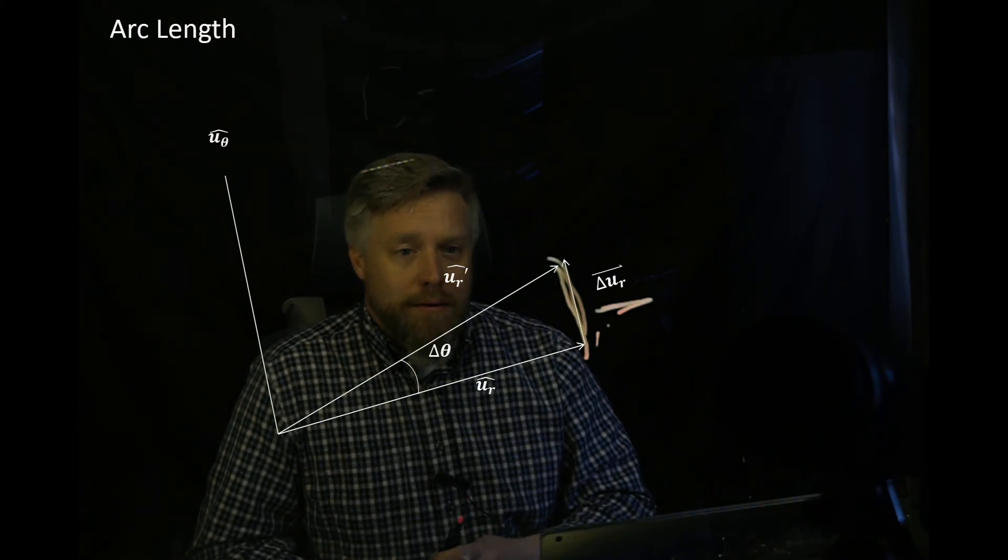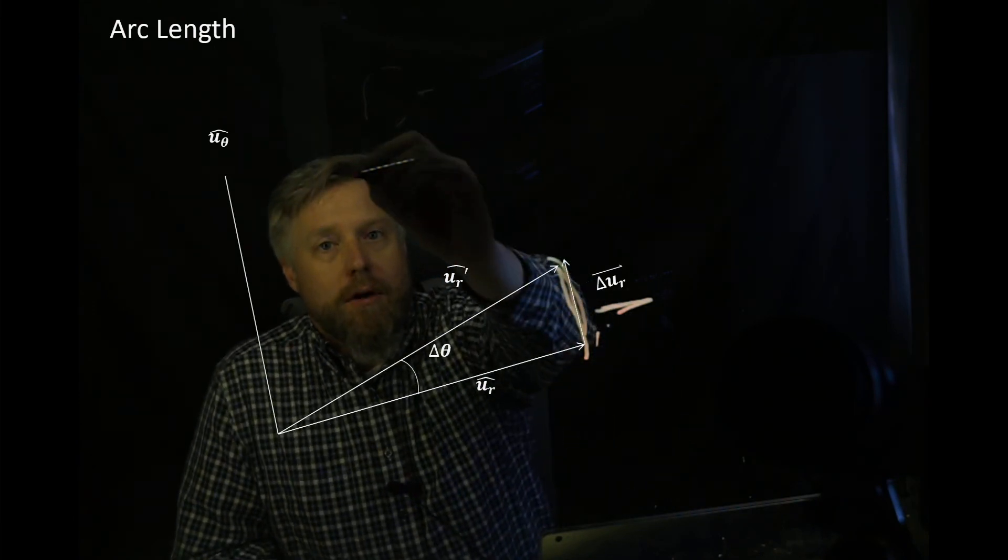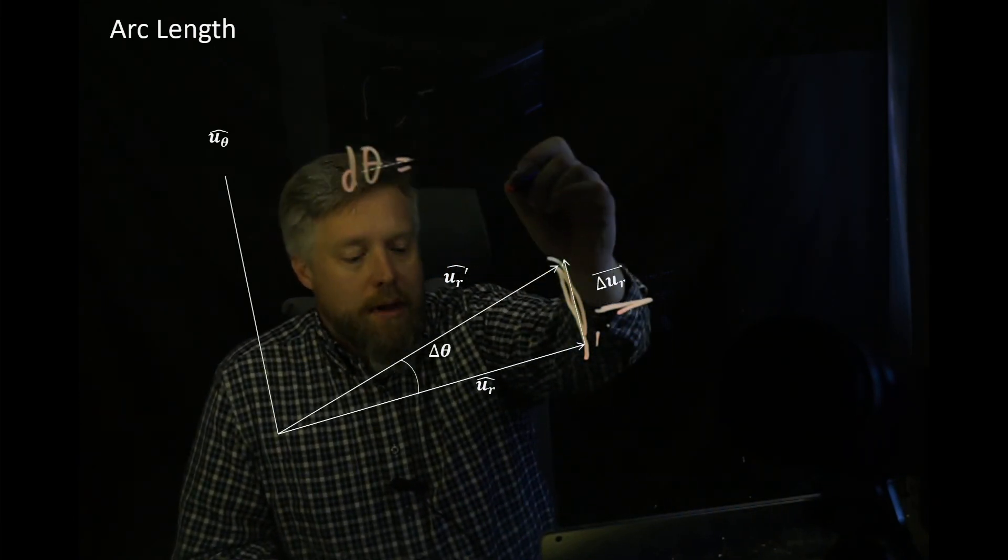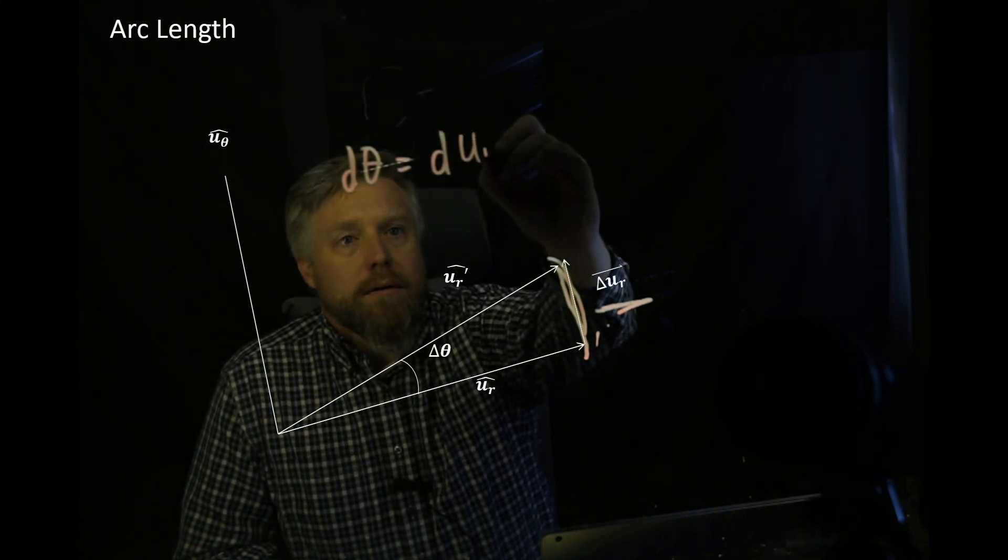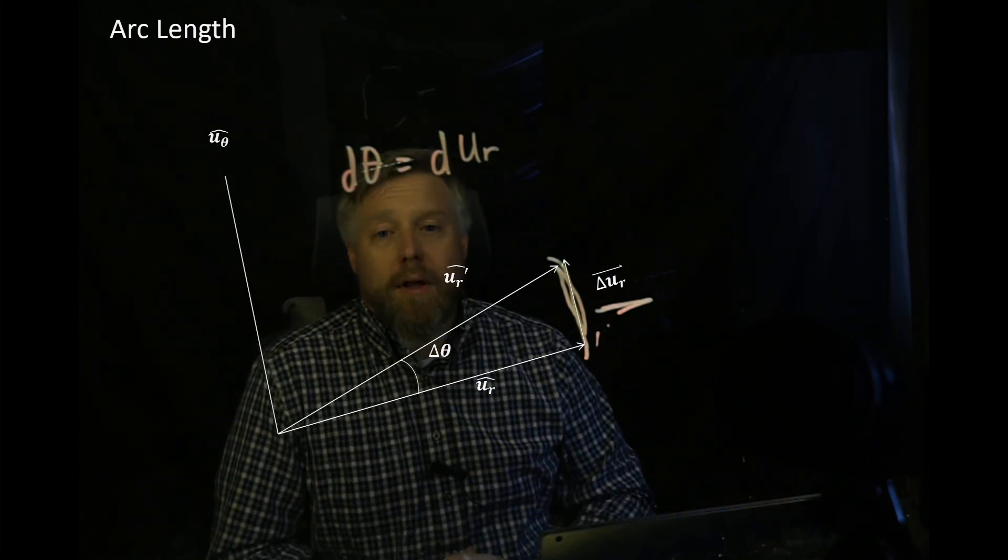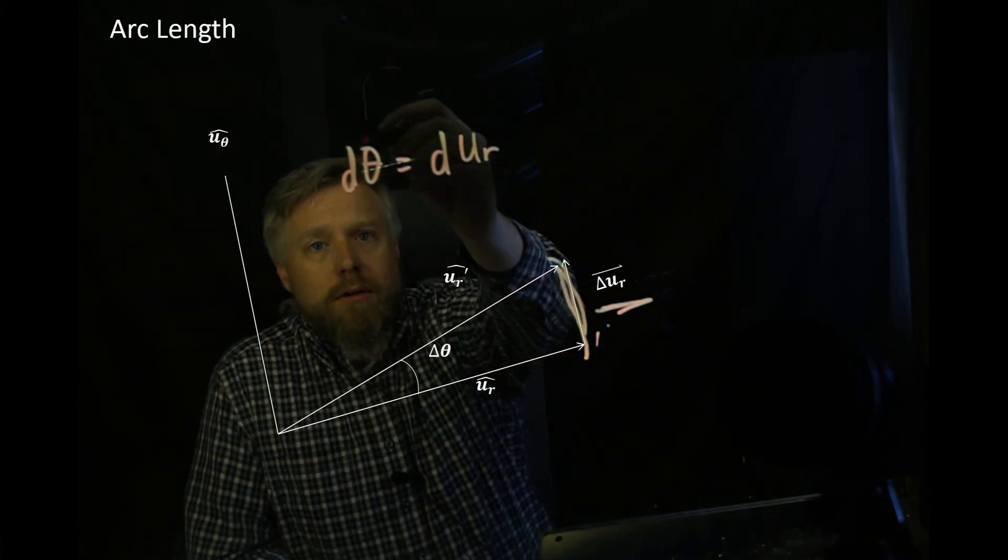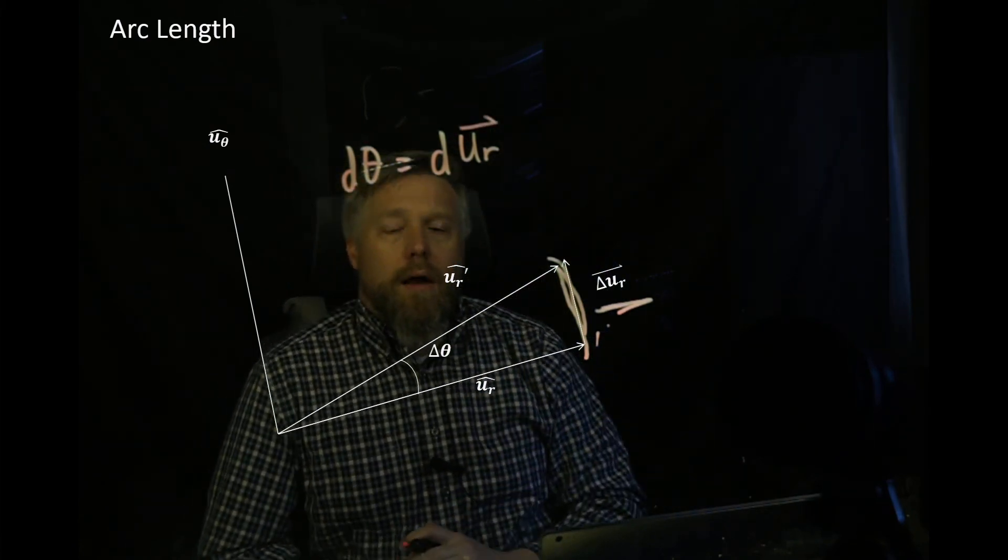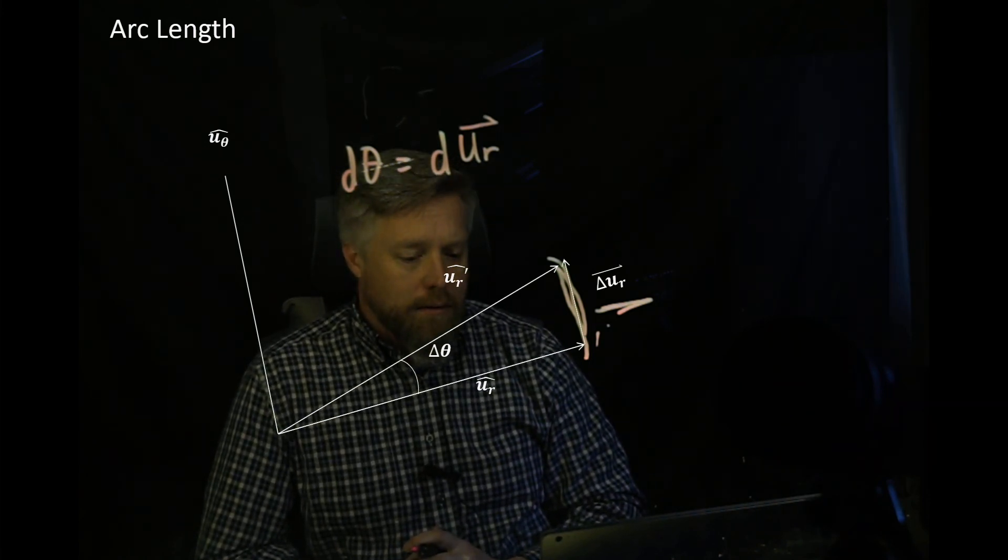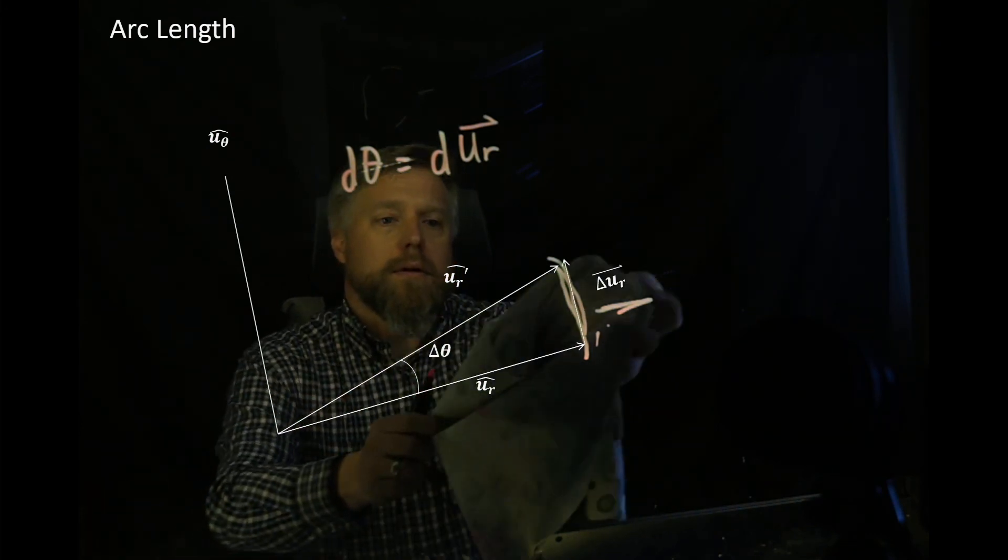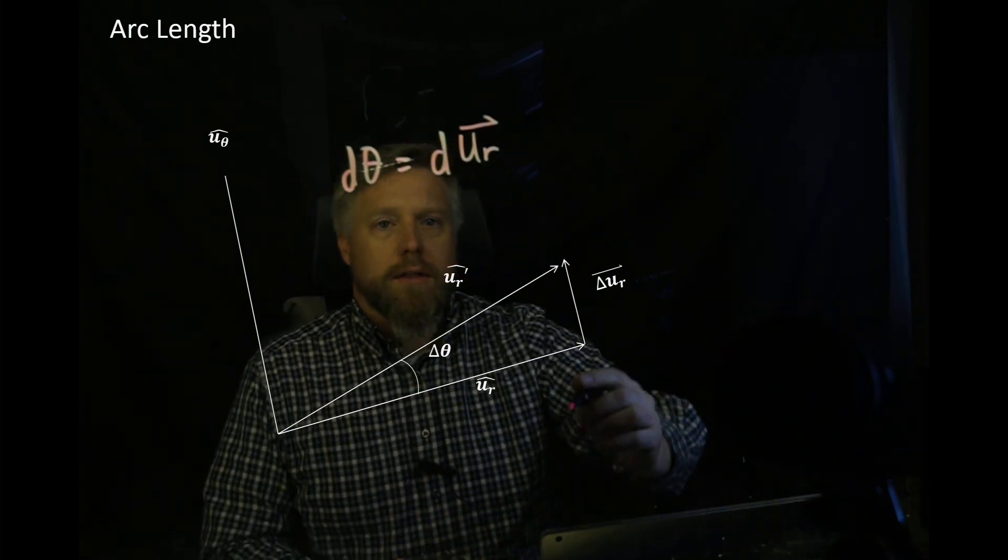Of course, the radius is one. So for small angles, we expect that a small change in theta is equal in magnitude to a small change in our unit vector, in our r vector, d(ur). The other piece of information is that a small change of that vector has magnitude d(theta), but which direction is it pointing? We can see the direction is perpendicular to ur, and we'll learn in the next video that's in the u-theta direction.